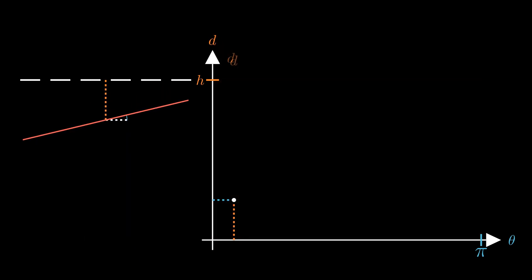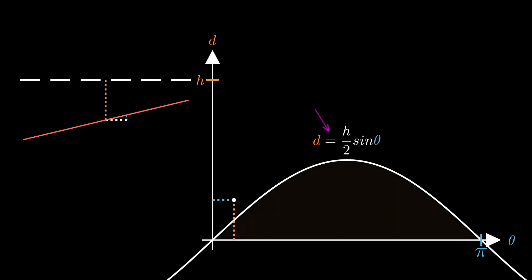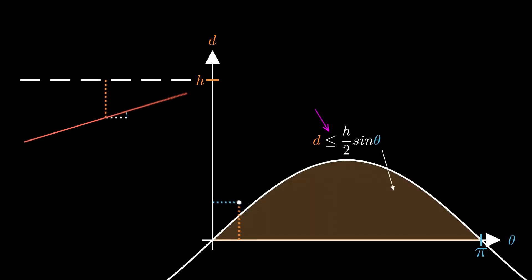Next, we'll draw the function d is equal to h over 2 sin theta. Notice that as we go along this function, the needle just touches the line. And this makes sense as we just calculated that the needle crosses the line when d is less than or equal to h over 2 sin theta.